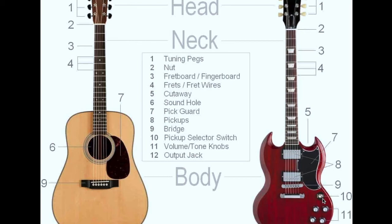On an electric guitar you can see different controls. These two are usually to control the tonal quality and these two are to control the volume. There is a volume knob and a tonal knob so you can control which pickup you want — the saddle pickup, the neck pickup, or both.